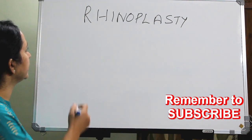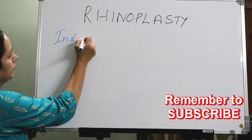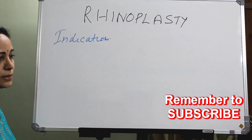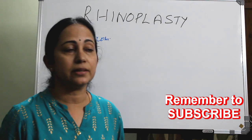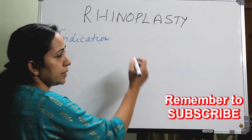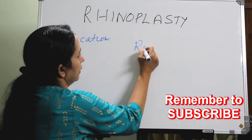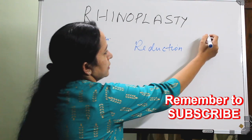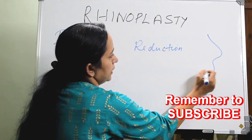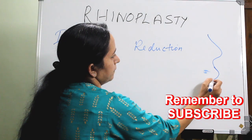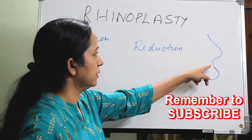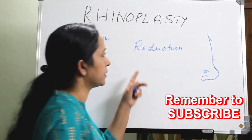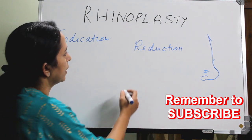What are the indications for rhinoplasty? One is elaborate reduction and augmentation. Reduction is done for a hump nose — if there is a hump in the nose, we have to remove and reduce it. That becomes a reduction rhinoplasty.